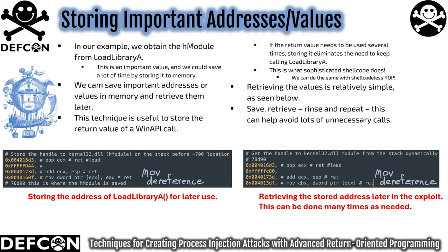Another immensely important concept is storing important values — addresses, handles, things obtained by calling a Windows API. If we call a Windows API to obtain one of these values it takes a lot of effort, and if we need it again we don't want to call it a second time, so we make an effort to save that value somewhere in memory and retrieve it later. We might move ESP to a location, advance forward 500 bytes, and start writing different values there, manually calculating a common reference point and making adjustments as needed.